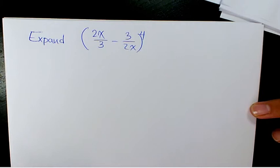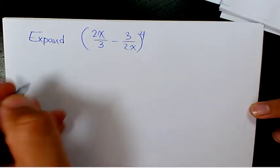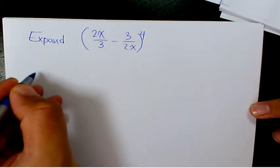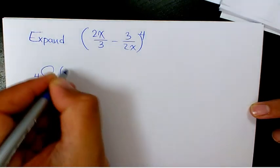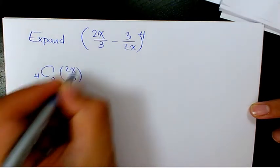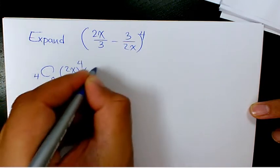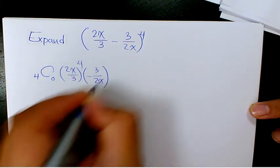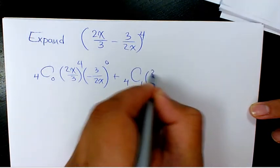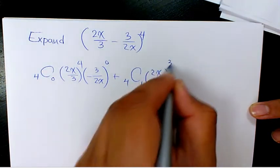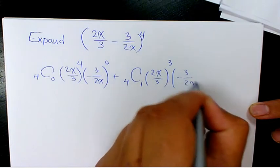So that's the binomial expansion, and what we need to do, we need to expand it in this way. 4C0, 2x over 3 to the power of 4, negative 3 over 2x to the power of 0, plus 4C1, 2x over 3 to the power of 4, negative 3 over 2x to the power of 1.